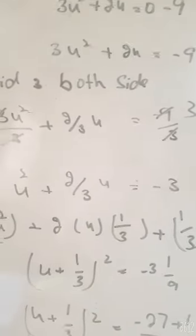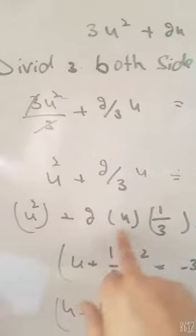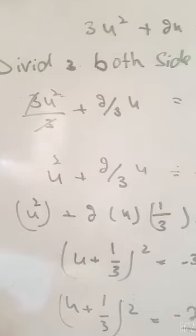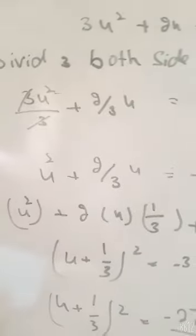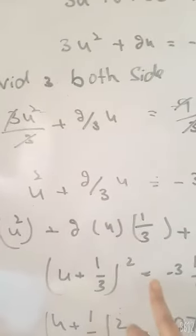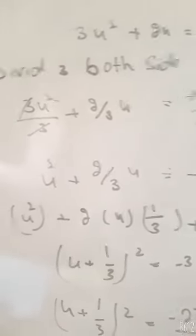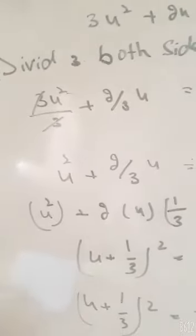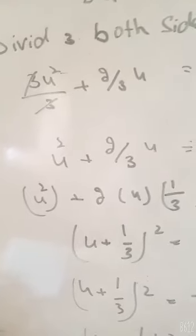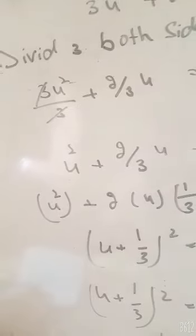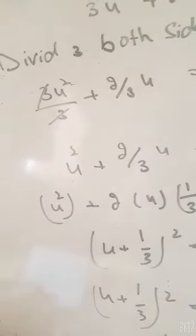x² + 2x(1/3) + (1/3)² on both sides. We will add (1/3)² to both sides. So (x + 1/3)² = -3 + 1/9. This becomes -27/9 + 1/9 = -26/9.